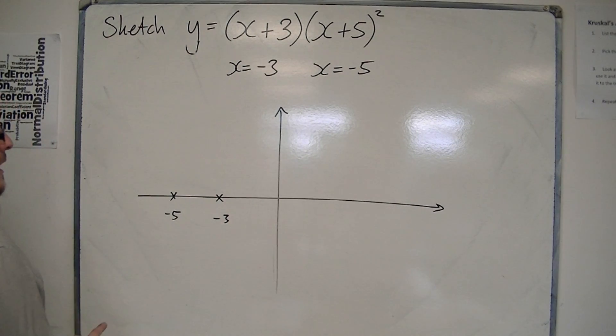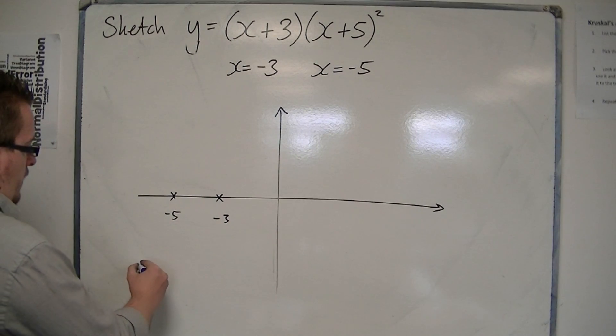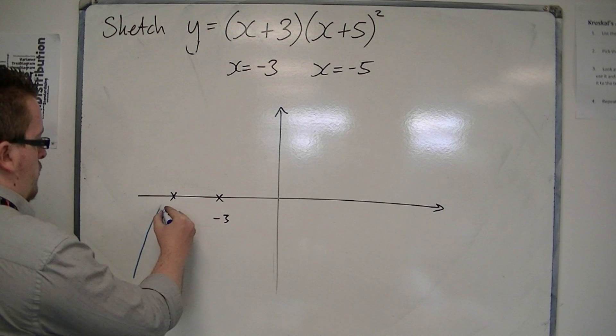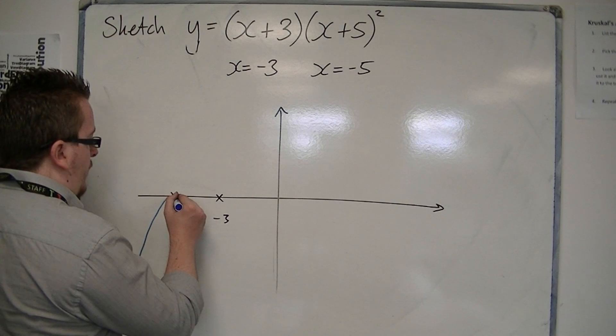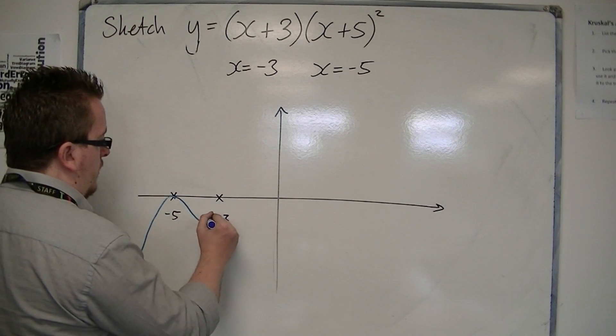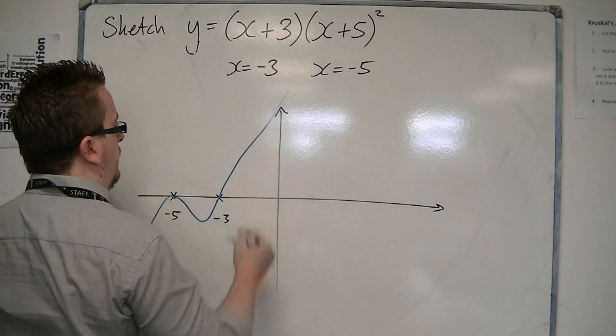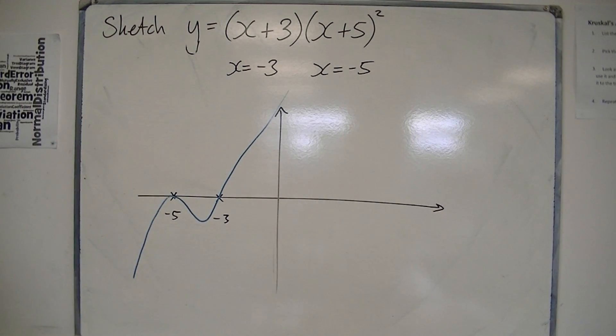But, because you're going to have a repeated root at minus 5, the curve just touches the x-axis at minus 5, and then comes back through to minus 3.